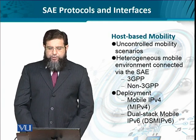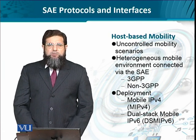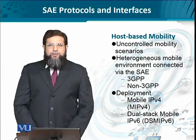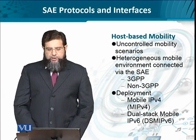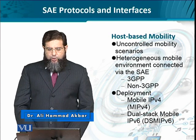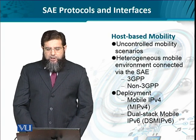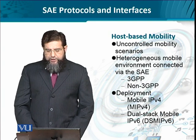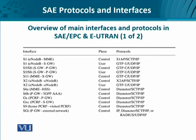Since the environment is so heterogeneous, all the radio access network technologies connected to the system architecture evolution — including both 3GPP compliant protocols and standards and non-3GPP protocols and standards — are covered. For such a highly heterogeneous environment, the deployment can be either through mobile IP version 4 or dual stack mobile IP version 6, meaning both IPv4 and IPv6 compatibility support is provided. Let's quickly have an overview of the interfaces defined in this 3GPP architecture for next generation networks.